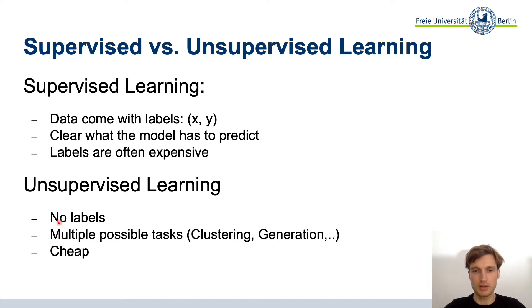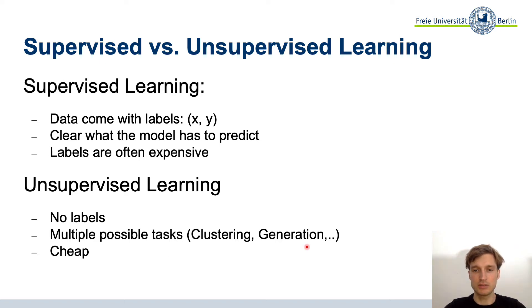In unsupervised learning we don't have any labels. We already talked about such algorithms, for example clustering — we talked about DBSCAN and k-means. But there are multiple possible tasks in unsupervised learning, for example generation: you can do image generation, and also generate text, music, and all different kinds of stuff. The good thing about it is that it is very cheap.